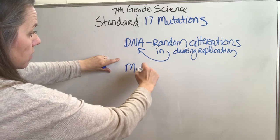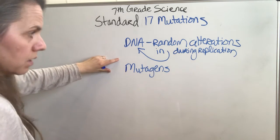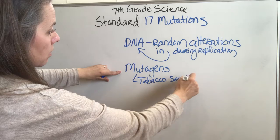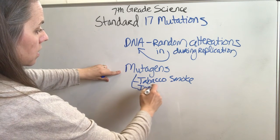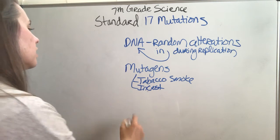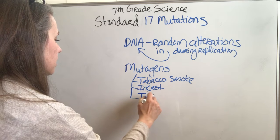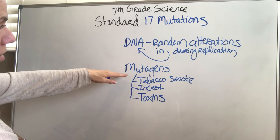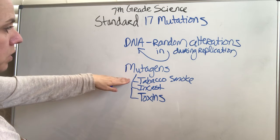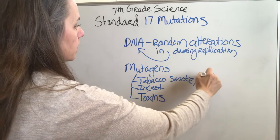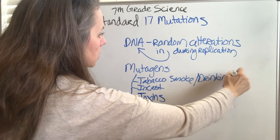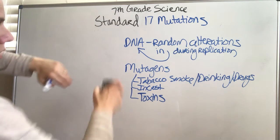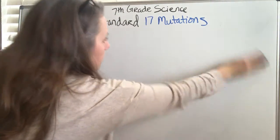The other cause is mutagens. We talked about tobacco smoke and other toxins that we could bring into our body and cause mutations. This is especially when the baby is developing in the mom's womb — if she's smoking, drinking, or doing drugs, those can all cause mutations in the genetic code.